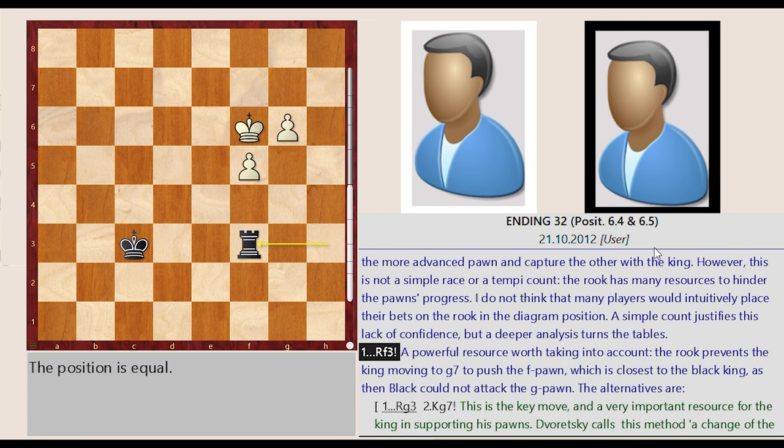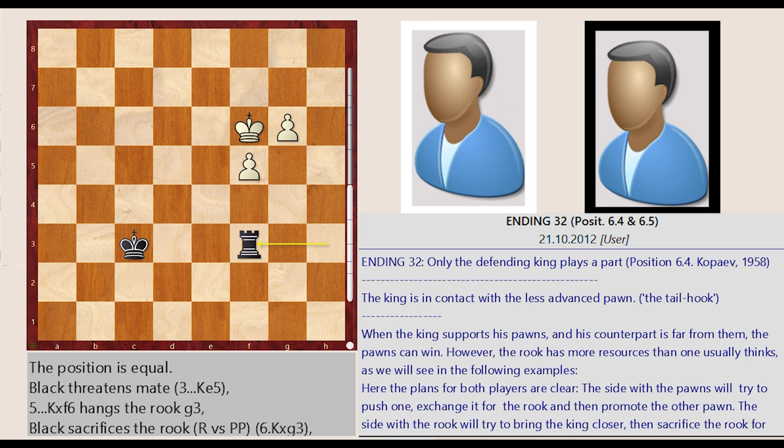Ending 32, only the defending king plays a part. Position 6.4, Copive 1958. The king is in contact with the less advanced pawn, the tail hook. When the king supports his pawns and his counterpart is far from them, the pawns can win.